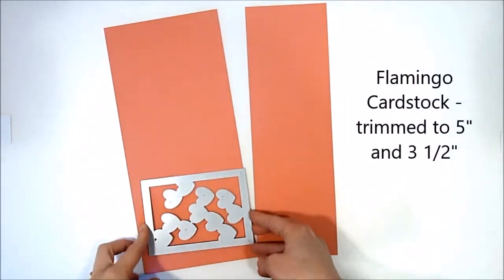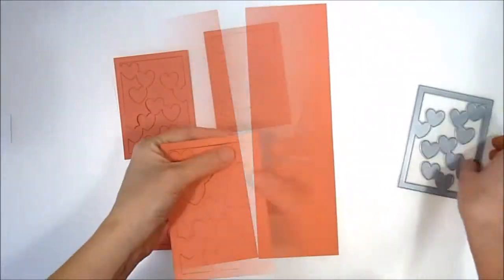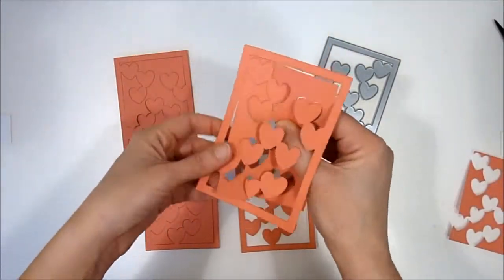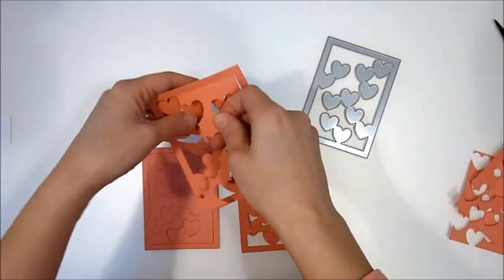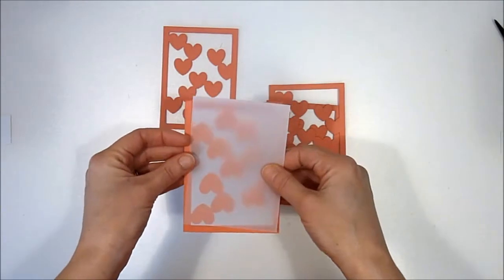I trimmed them down to five inches wide and three and a half, as you can see as I laid it out there. This allows me to make this project with just one eight and a half by eleven piece of cardstock, and I die cut my Falling Hearts confetti cuts four times to make all four panels.